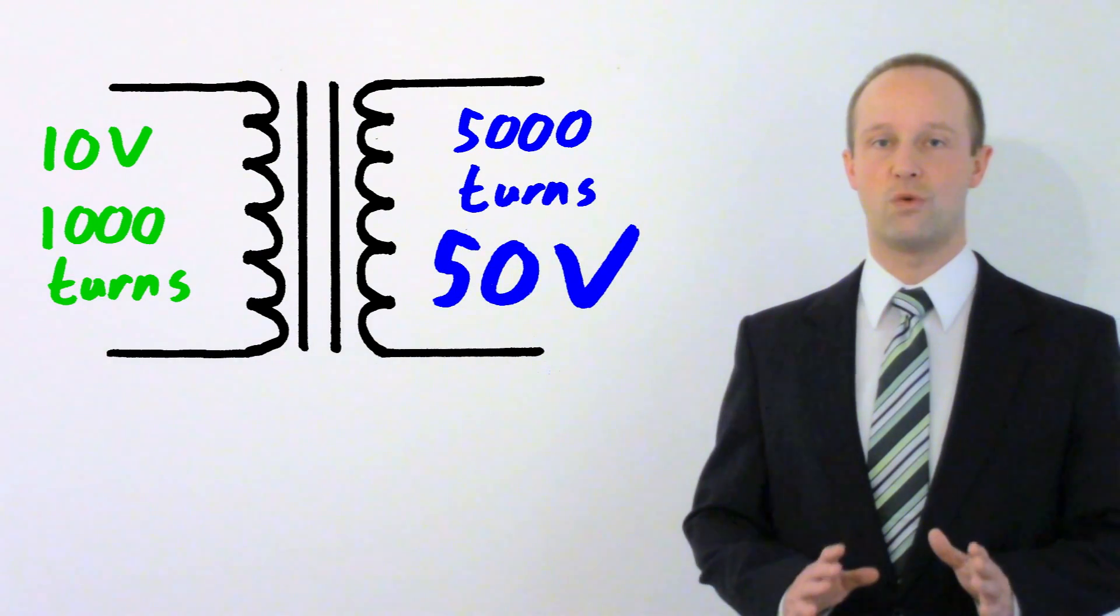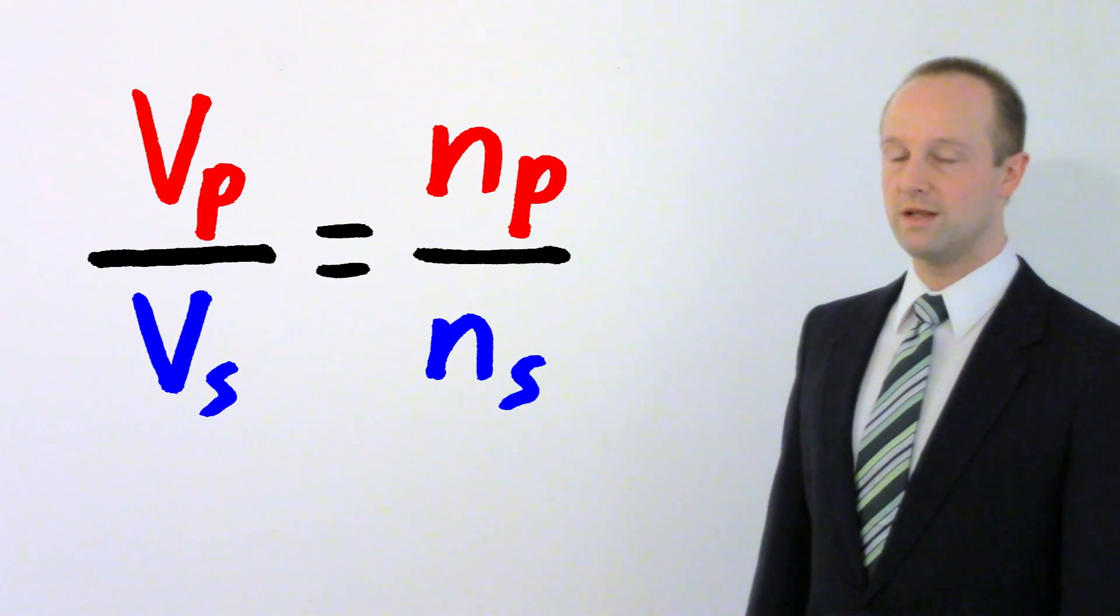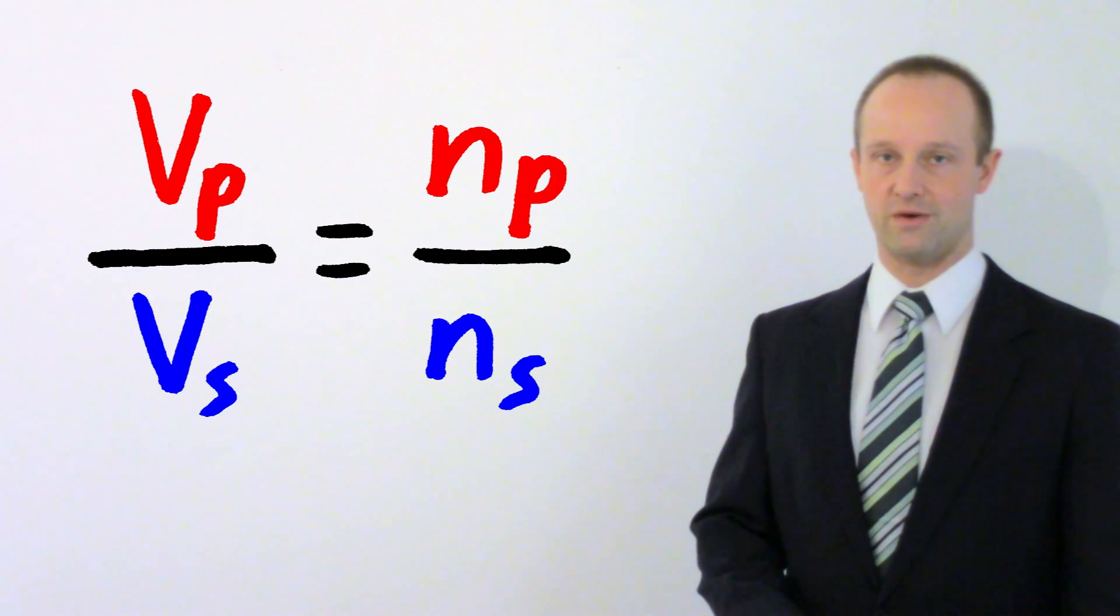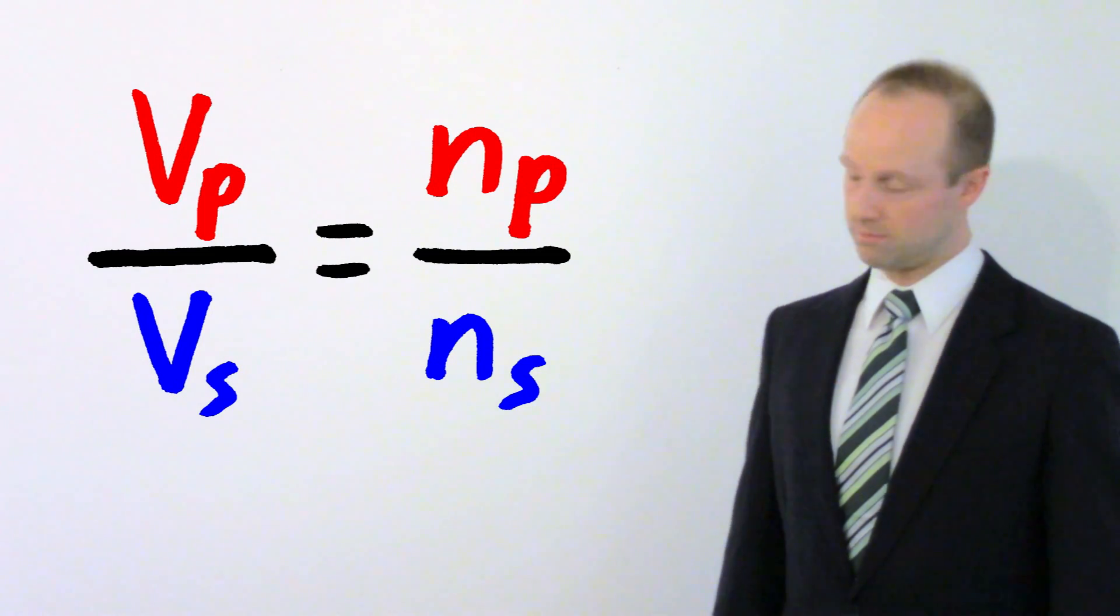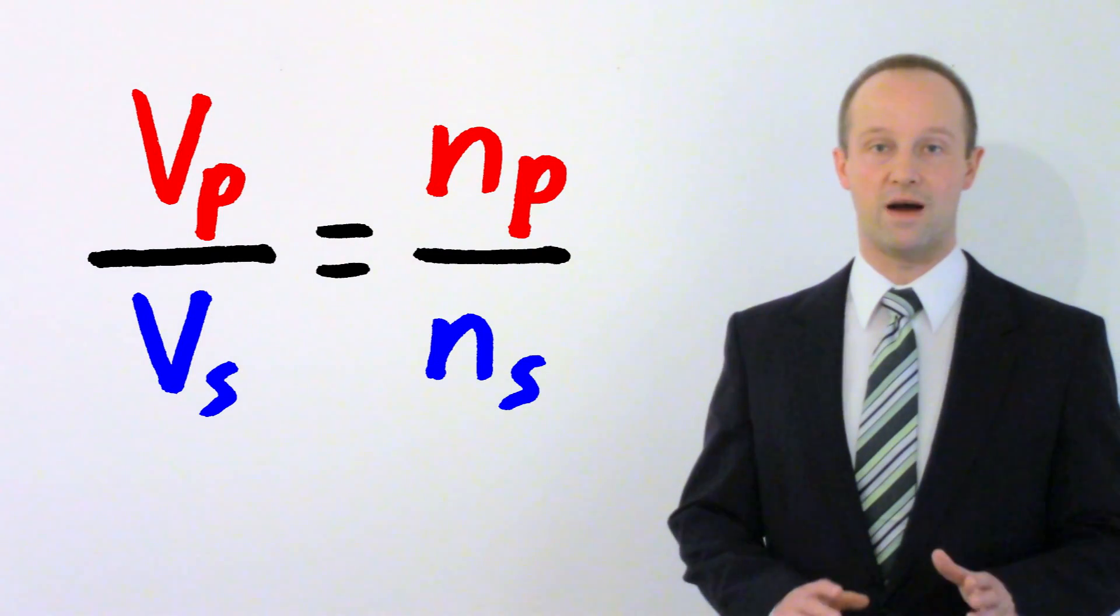There is an equation which shows this relationship. I really wouldn't spend too much time worrying about that equation though. All you need to remember is if you've got five times as many turns on the secondary coil then you have five times the potential difference coming out.